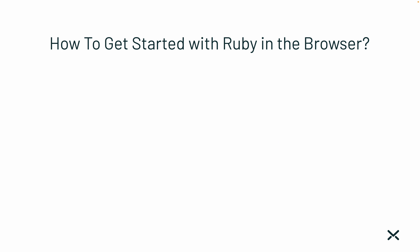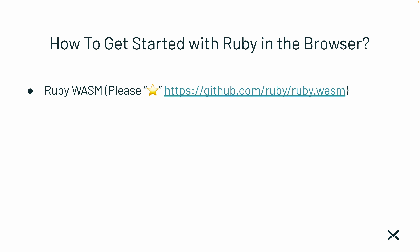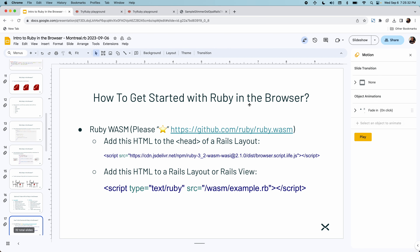So how do we get started with Ruby in the browser? That is one of the main questions being answered by this presentation. First, let's start with Ruby Wasm — please star this project on GitHub. To learn more, go to github.com/ruby/ruby.wasm. Let me click it to give you a quick idea of the project.